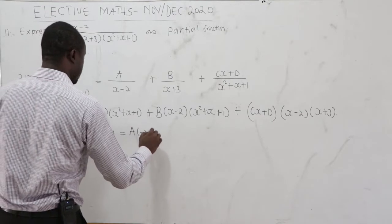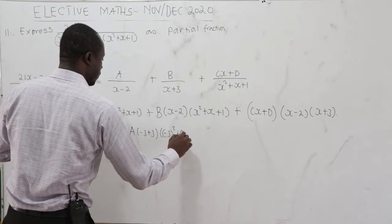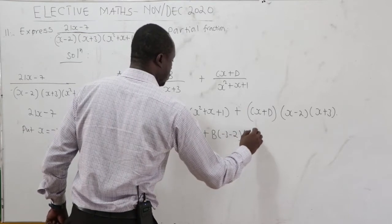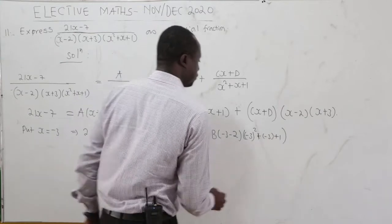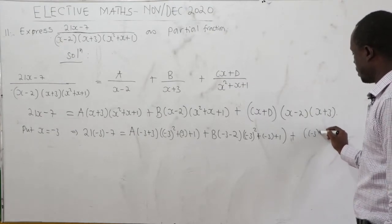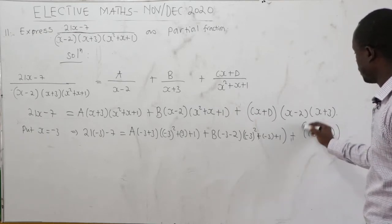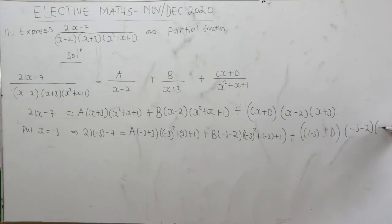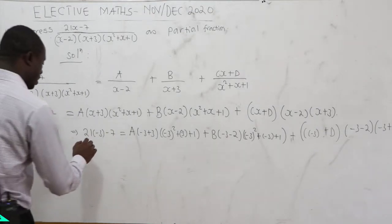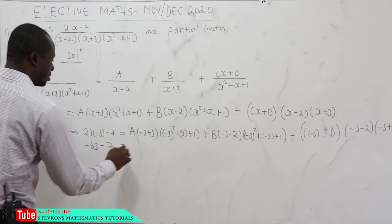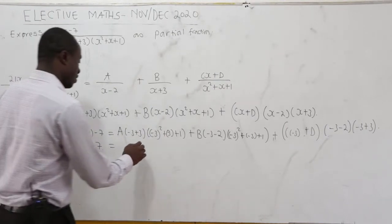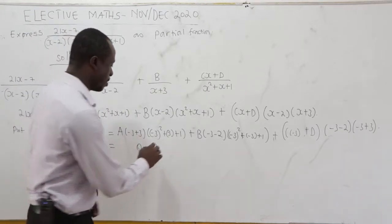On the right side, the A term has (negative 3 plus 3) which is zero, so that whole term vanishes. The Cx plus D term also has (negative 3 plus 3), making it zero. We're left with B times (negative 3 minus 2) times (negative 3 squared minus 3 plus 1).